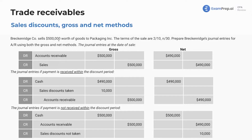Breckenridge Company sells $500,000 worth of goods to Packaging Inc. Terms of the sale are 2/10 net 30. As I showed you before, this means that if Packaging pays Breckenridge in 10 days, they get a 2% discount — so 2% of $500,000. We'll see that taken into account here: the $10,000 discount. And if they don't, they have to pay within 30 days.